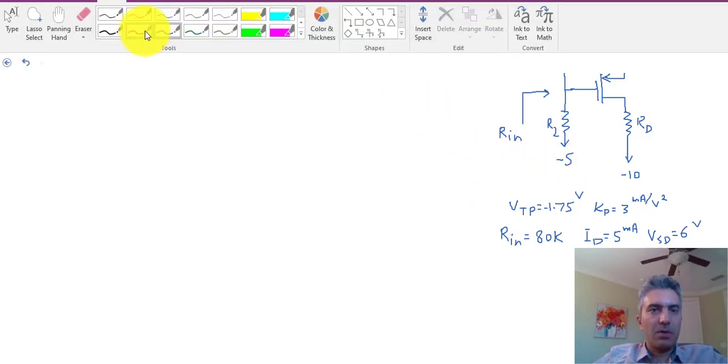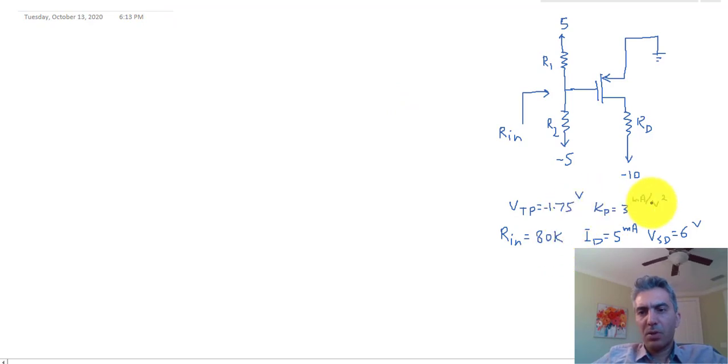Let's practice that for this specific question. These are what's known. We know what the input resistance is, we know what the current of the transistor is, and we know what the source-drain voltage of the transistor is. Obviously we do know the parameters that we need to use to describe the operation of the transistor, and what needs to be calculated are R1, R2, and Rd.